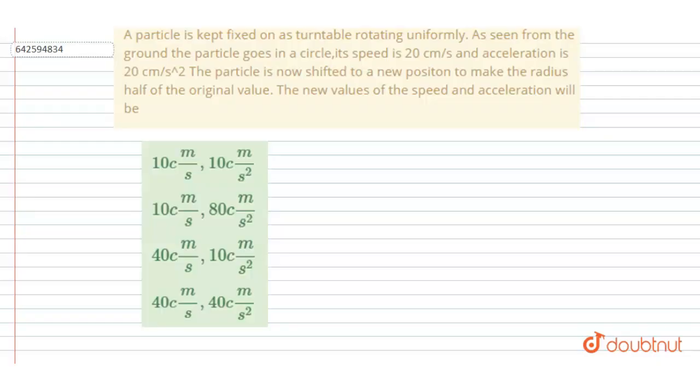It is given that a particle is kept on a turntable rotating uniformly. As seen from the ground, the particle goes in a circle. Its speed is 20 centimeter per second and acceleration is 20 centimeter per second squared.